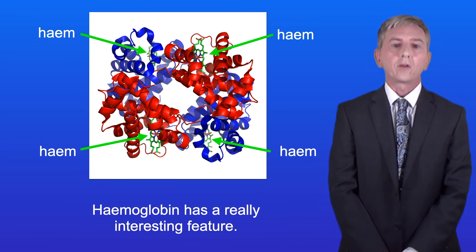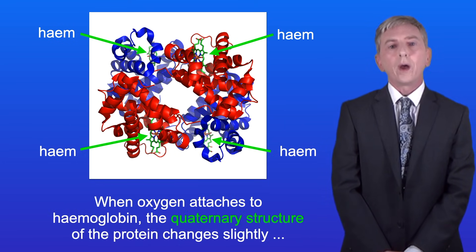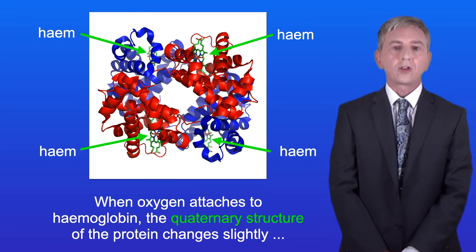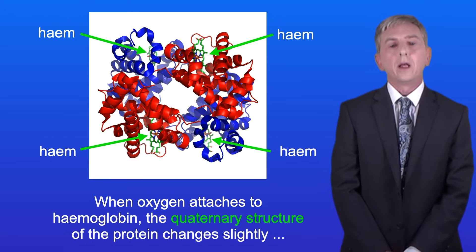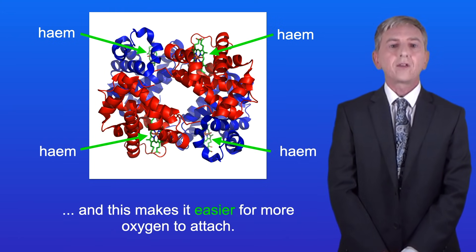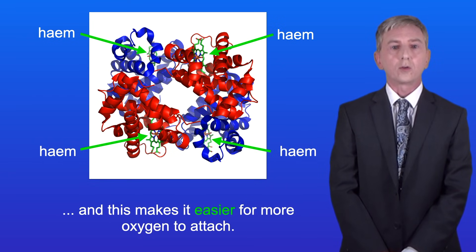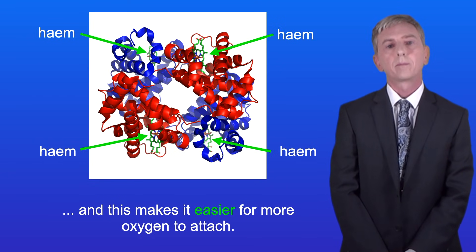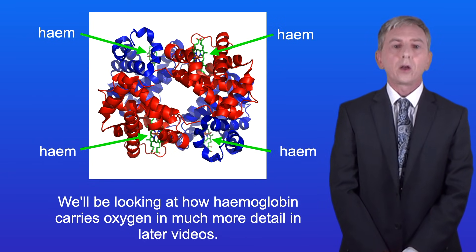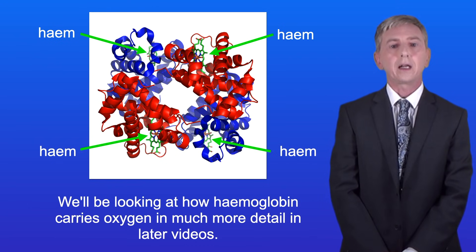Haemoglobin has a really interesting feature. When oxygen attaches to haemoglobin, the quaternary structure of the protein changes slightly, and this makes it easier for more oxygen to attach. We'll be looking at how haemoglobin carries oxygen in much more detail in later videos.